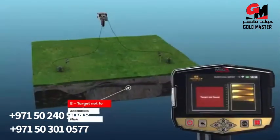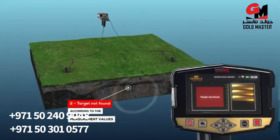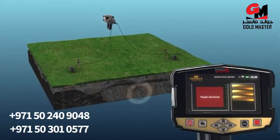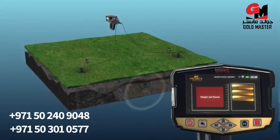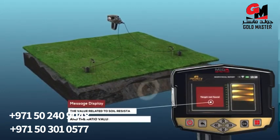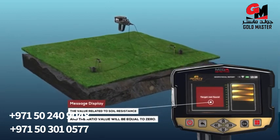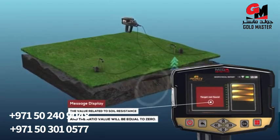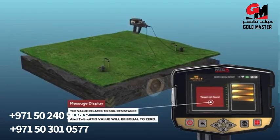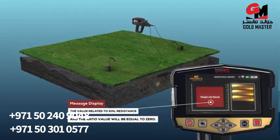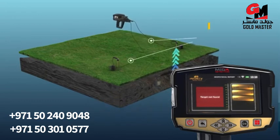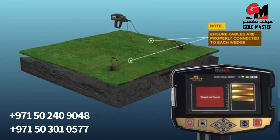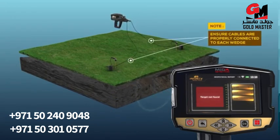Target not found: The ellipsoid curves will not be drawn; instead, a message will be displayed indicating that the target was not found. In this case, the soil resistance value and the ratio value will both equal zero. Note: ensure cables are properly connected to each wedge. If one of the wedges is not connected, a message will be displayed indicating that the target was not found.